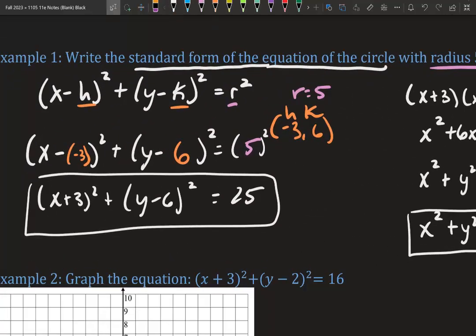Notice that when we went to standard form, our h and k turned opposite. H was originally negative 3, now it's positive 3. K was originally positive 6, now it's negative 6. Also, we squared r to get 25. Keep that in mind before we graph.